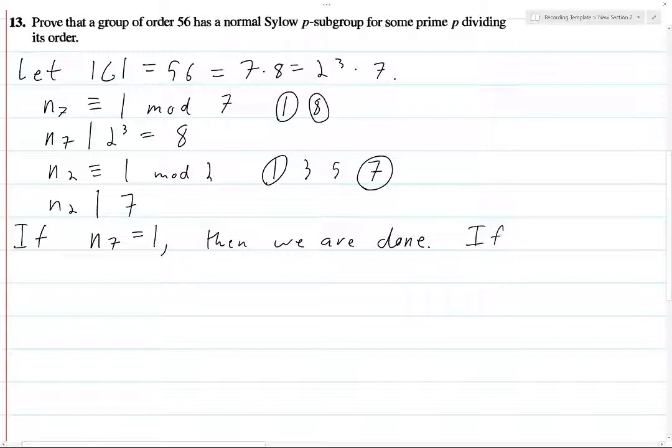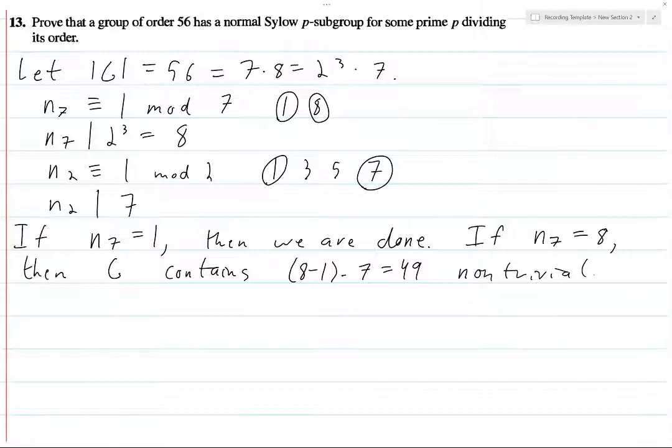So that's if N₇ equals 1. If N₇ equals 8, then G contains 8 minus 1 times 7, which is 49, non-trivial. Wait a minute, wait a minute, wait a minute. No, I'm doing this wrong. I'm thinking if N₂ equals 1, then we're done. If N₂ equals 7... Oh, did I write this down wrong? I think I might've messed this up a little bit.